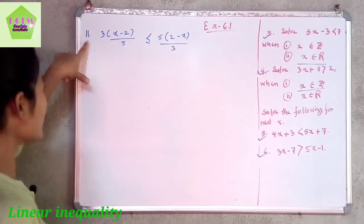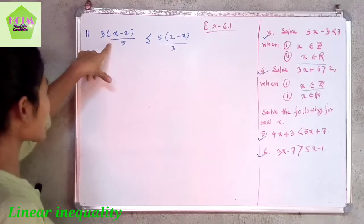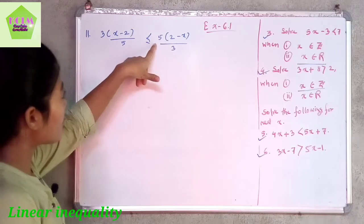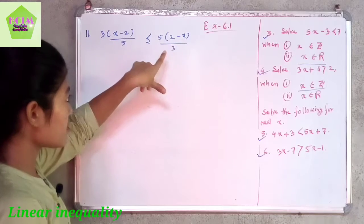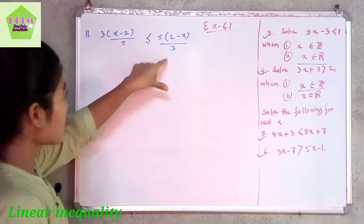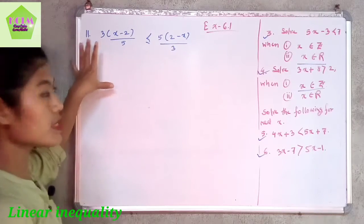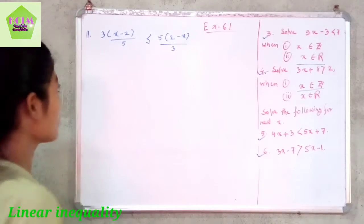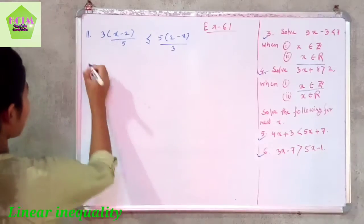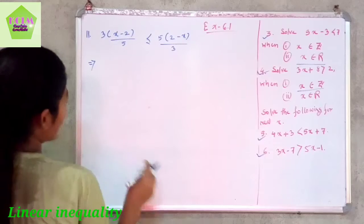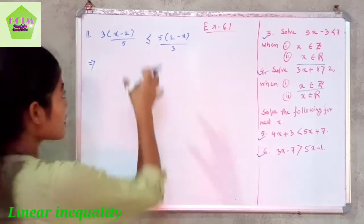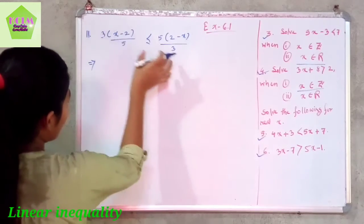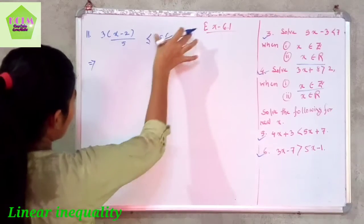Question number 11: solve 3 times (x minus 2) divided by 5, less than or equal to 5 times (2 minus x) divided by 3. We have to solve this linear inequality for real x. First of all, we cross multiply the linear inequality, multiplying 3 into the left side and 5 into the right side.